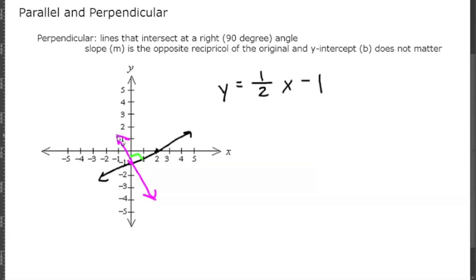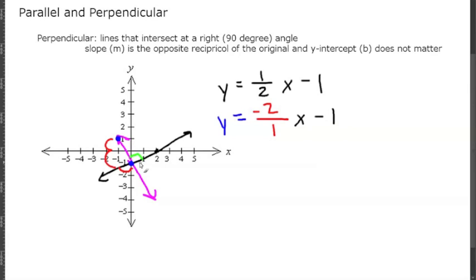Looking at two points on this purple line — (-1, 1) and (0, -1) — the slope is the rise of negative 2 over a run of positive 1, giving us negative 2 over 1. The y-intercept is negative 1. You can see that the 1 and 2 were switched, making it the reciprocal, and instead of being positive it's now negative — that makes it the opposite reciprocal.